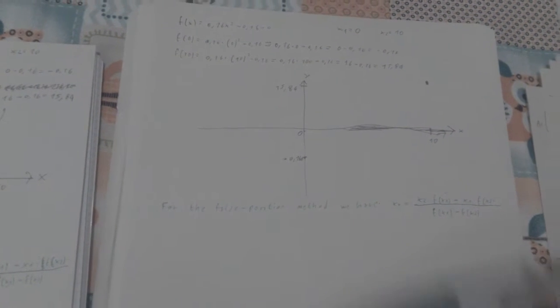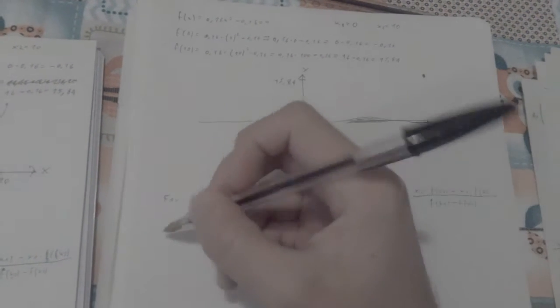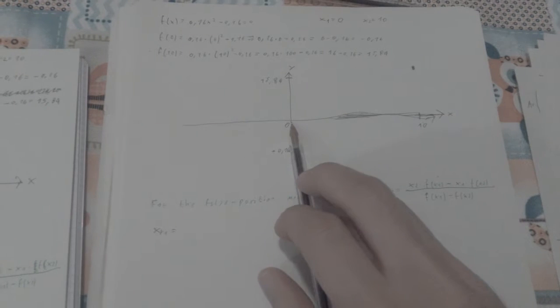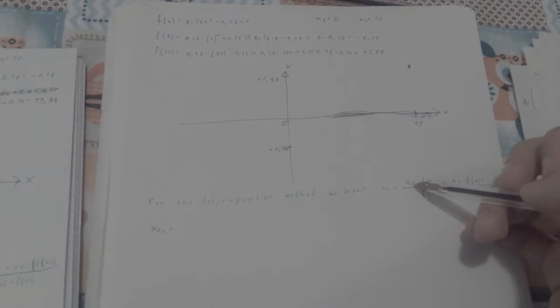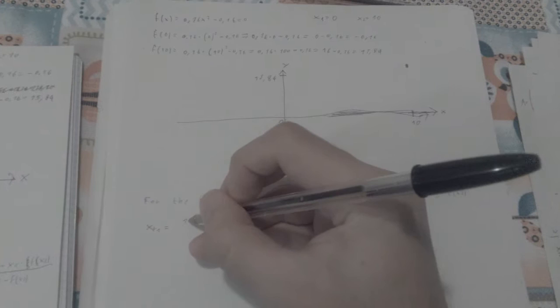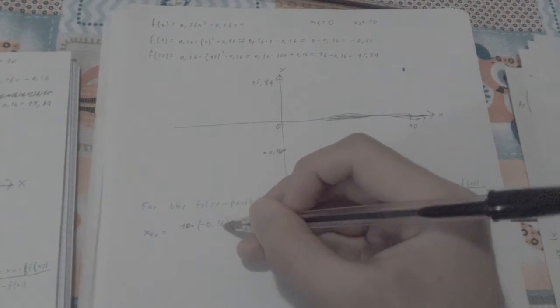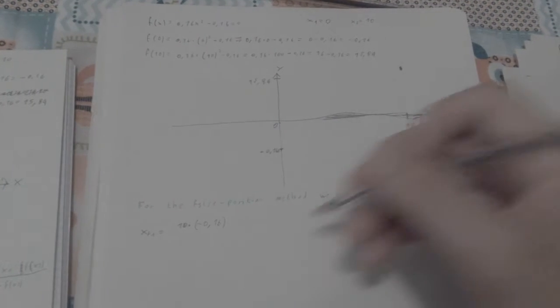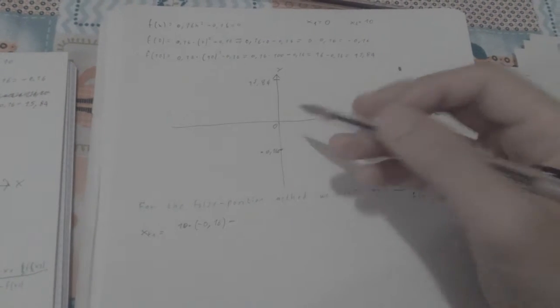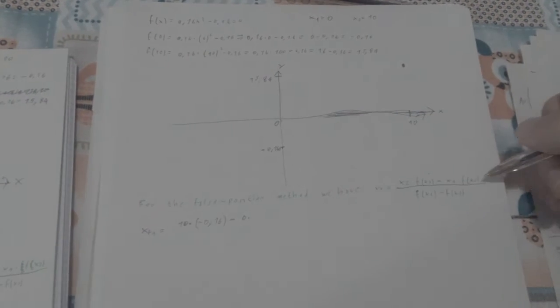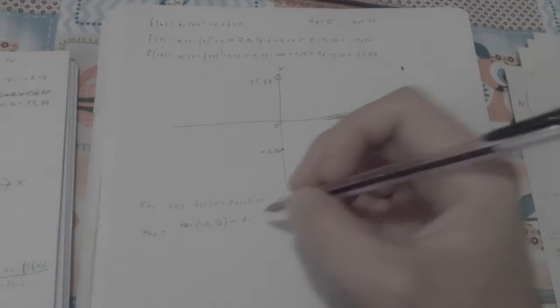So this formula actually tells us that if we look for xr1, I'm going to start in between 0 and 10. We're going to start with x2, so 10 times f(x1), so negative 0.16, minus x1, so 0 times f(x2), so 15.84.